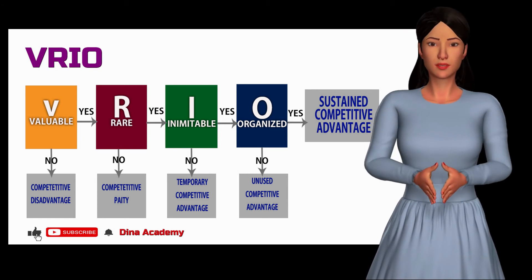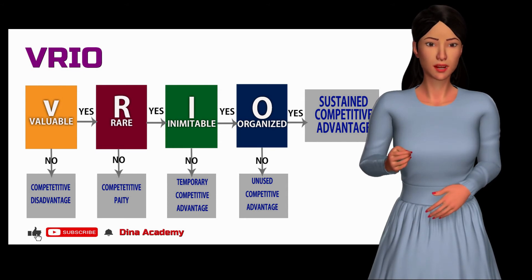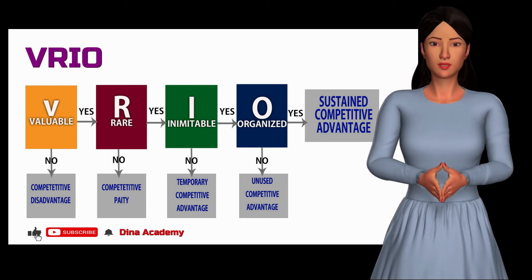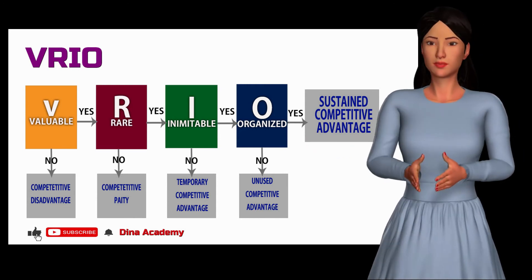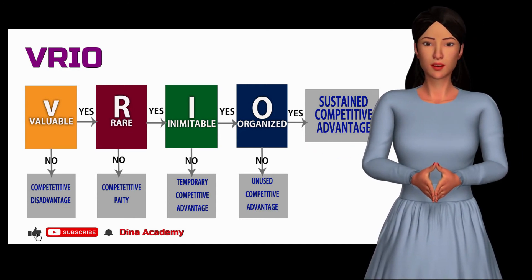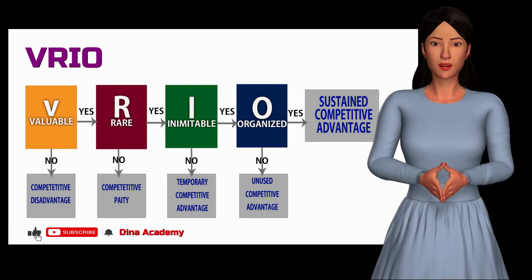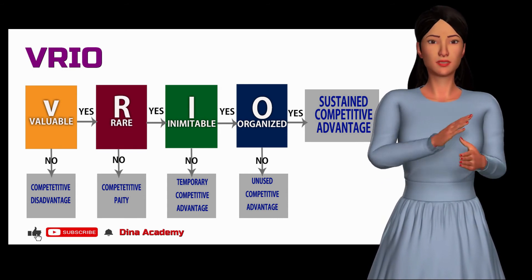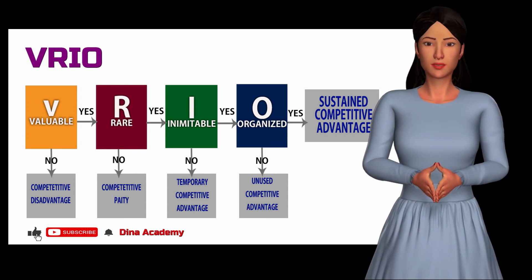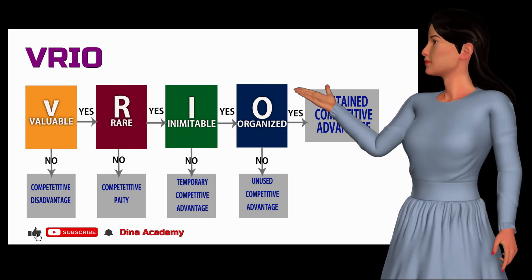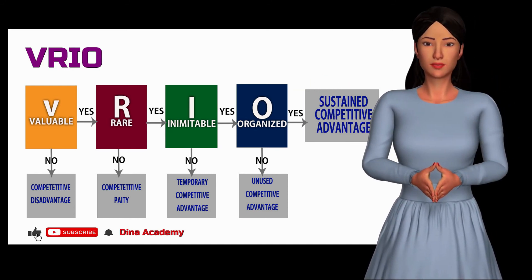Having a VRIO framework in place allowed Google to take a completely different approach to human capital management and make decisions using massive amounts of objective data. For example, Google's people operations team set out to identify which characteristics make a great manager. The data used included surveys, performance evaluations, and great manager nominations. Google also conducted double-blind interviews with the company's highest and lowest rated managers. By determining what qualifies as a great manager, Google strengthens its internal team and the foundation of its sustained competitive advantage.